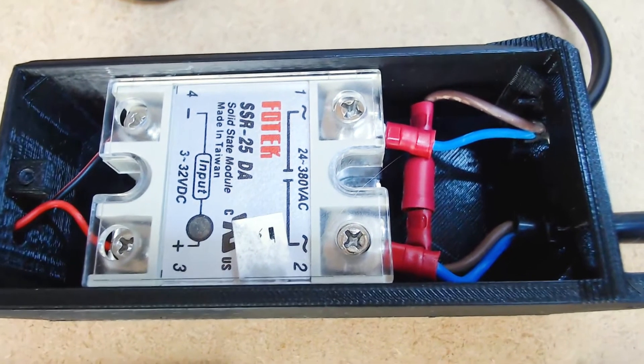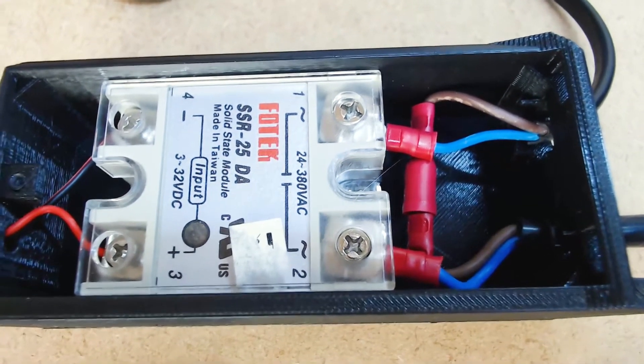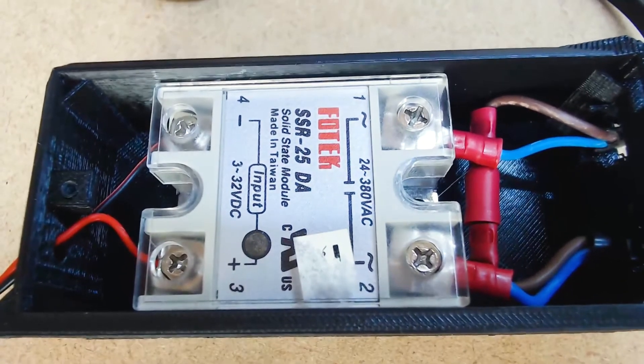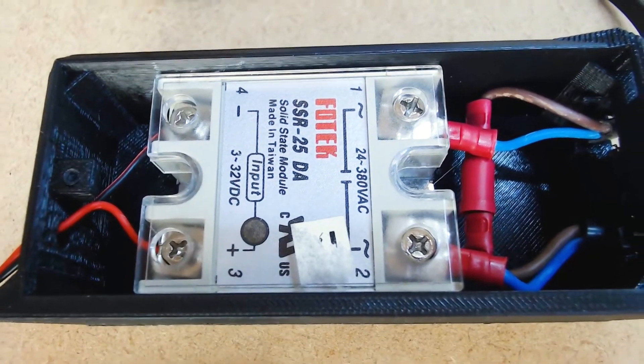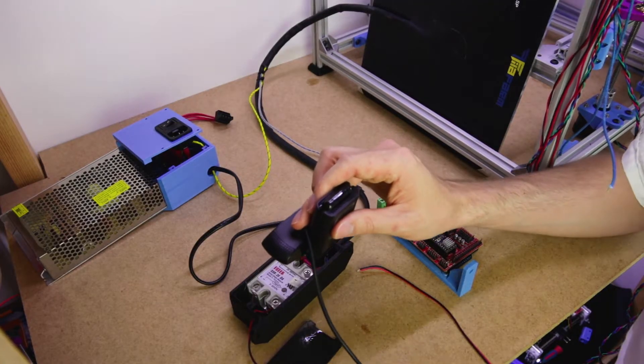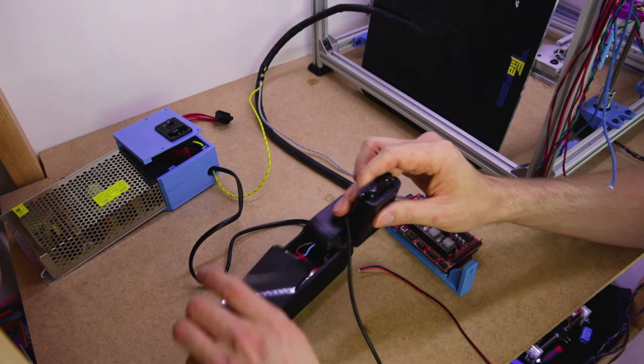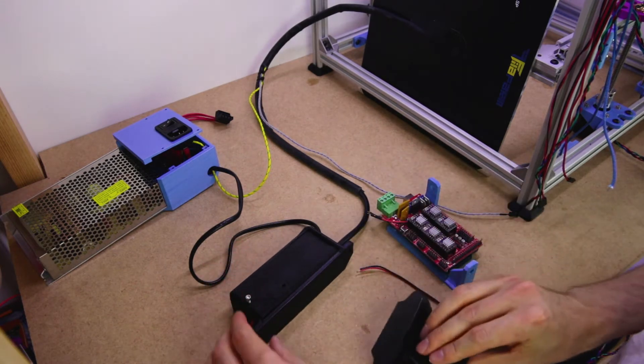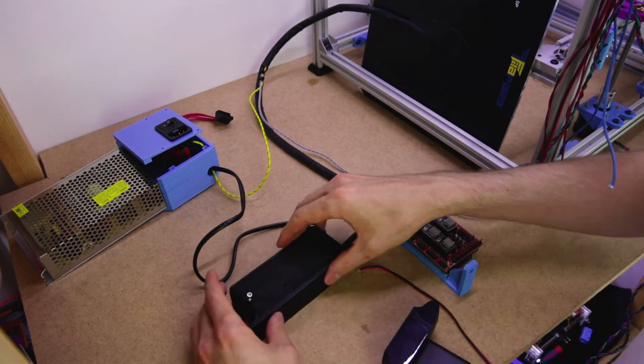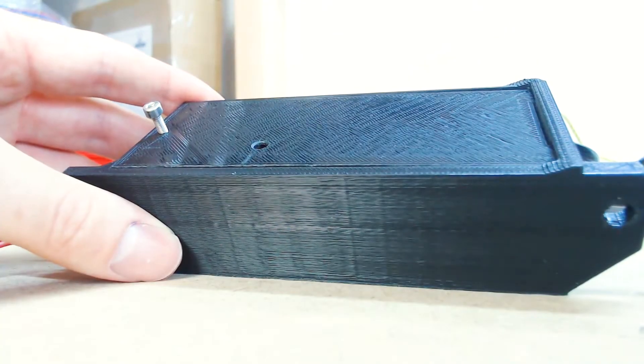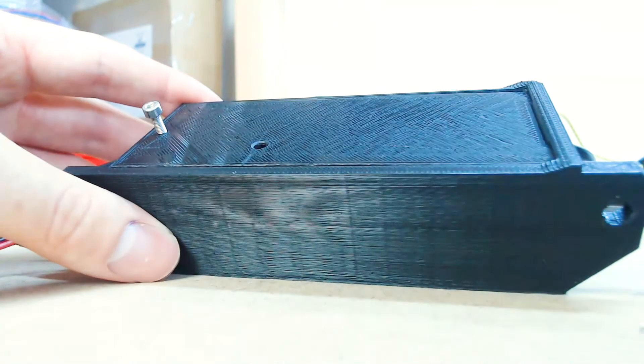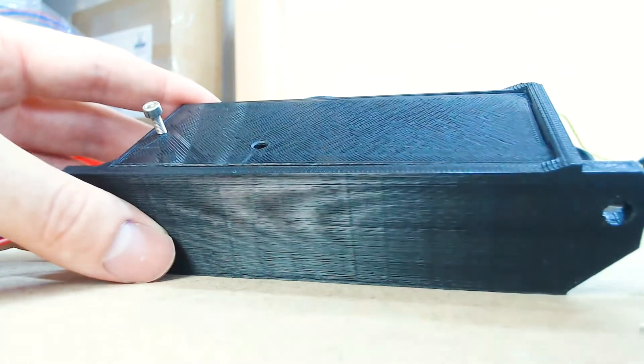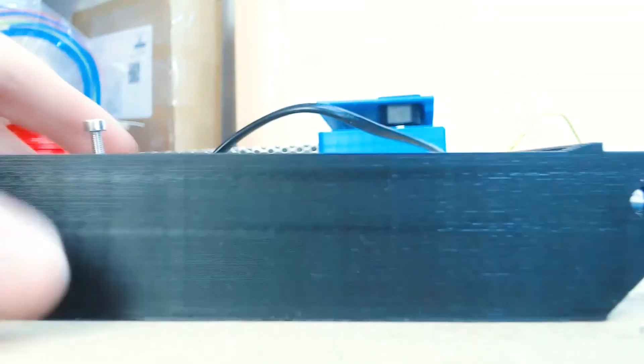You can also see there on the FOTEK SSR, just by the positive on the 3 to 32 volt side, there's a little light and that little light shows you when it's on. So when you place the cover on and you screw it down, you should be able to see the little light in there and you'll know that that's working. I've done that just literally so you know that it's working. If it stops flashing when you think it should be, then something's not right.